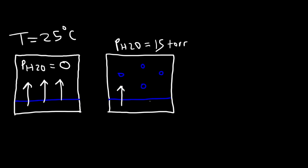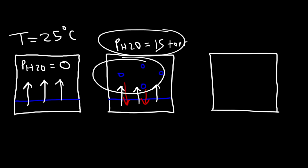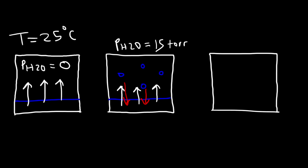Water will continue to evaporate at the same rate because the temperature is still 25 degrees Celsius. Since we have some water molecules in the air already, some will condense back into the liquid phase, so we have evaporation and condensation occurring at the same time. Notice there are three arrows going up and two going down, meaning the rate of evaporation exceeds the rate of condensation. The rate of condensation depends on temperature and also on pressure — the more molecules in the vapor phase, the greater the rate of condensation.